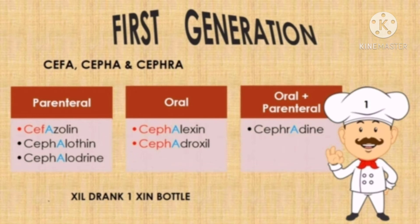One mnemonic to remember the first generation drugs administered orally is 'Zil drank one Zin bottle', where 'Zil' stands for cefadroxil and 'one' indicates it belongs to the first generation cephalosporins. 'Zin' stands for cephalexin. Cephradine is the drug which belongs to the first generation of cephalosporins and can be administered orally as well as through the parenteral route.